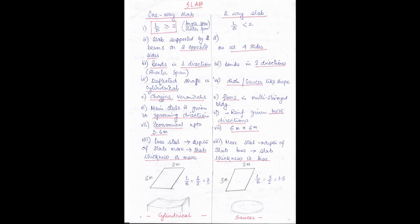In case of a one-way slab, the slab is supported by beams on two opposite sides. But in a two-way slab, it is supported on all four sides. In a one-way slab, it bends in one direction — along the shorter span. But in a two-way slab, the slab bends in both directions. The deflected shape of a one-way slab is cylindrical, while in a two-way slab the deflection is in the shape of a dish or a saucer.